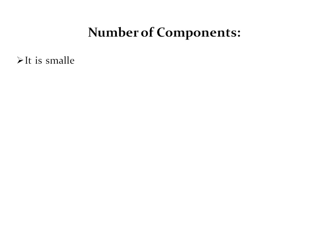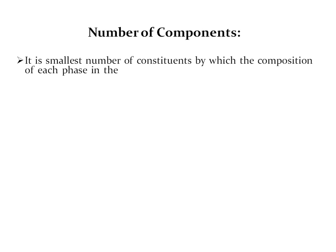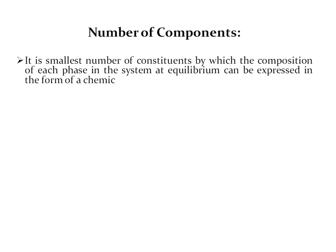The second definition related with the phase rule is number of components. It is the smallest number of constituents by which the composition of each phase in the system at equilibrium can be expressed in the form of a chemical formula or equation.